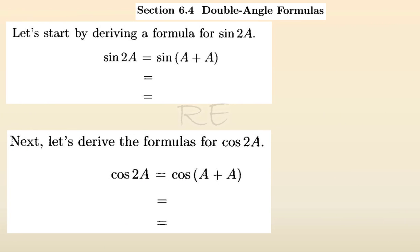If we understand sine 2a to be sine of (a + a), then sine 2a becomes sine a cosine a plus sine a cosine a, which equals 2 sine a cosine a.